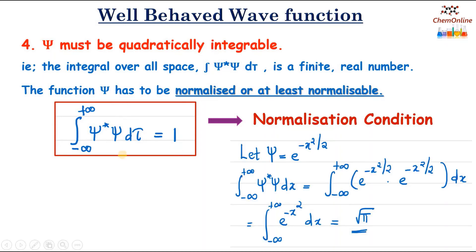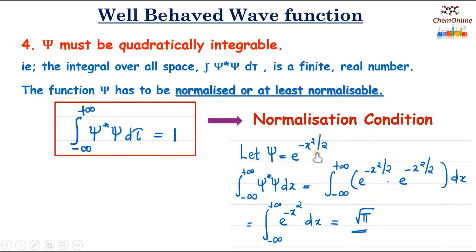If the value is not equal to 1, but is equal to some other finite real number, then we can also consider ψ as an acceptable function. For example, let ψ = e^(−x²/2).